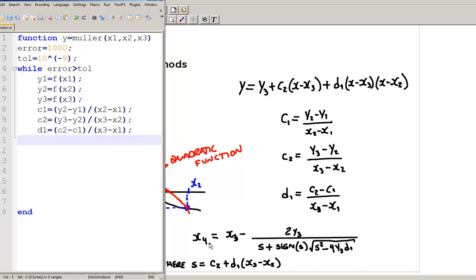And then, finally, I need to define x4. But notice that x4 needs s, the variable s. So, let's define s first. That's c2 plus d1 times x3 minus x2. And then, finally, x4 equals to x3 minus, and then, this will be in the numerator, 2 times y3 divided. Now, let's open the parenthesis so I can put this whole denominator in there. So, that will be s plus, and then, signal.